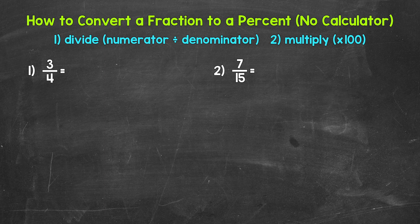When converting fractions to percents, we can do this by dividing and then multiplying. We take the fraction and divide the numerator by the denominator — the top divided by the bottom. This will give us a decimal. We then need to convert that decimal to a percent by multiplying it by 100. A quick way to multiply by 100 is to move the decimal twice to the right. So we go from a fraction to a decimal, and then that decimal to a percent.